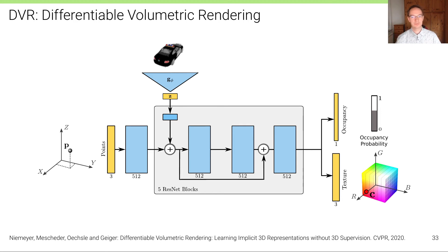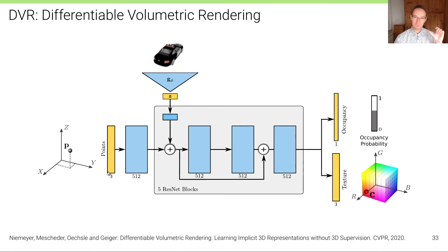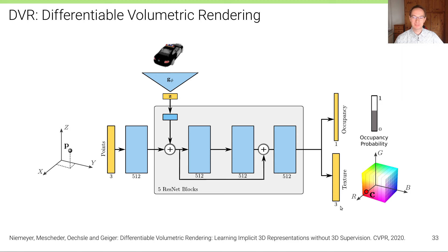We have one backbone and two shallow heads — one model predicting both occupancy and texture. For multi-view reconstruction we need to represent both occupancy and appearance, just as we did in the discrete case with the ray-based probabilistic volumetric voxel-based reconstruction in lecture six. The input is coordinates — that's why these are called coordinate-based representations. The output for each coordinate, potentially including view direction and light direction, is the occupancy probability and the RGB color value.